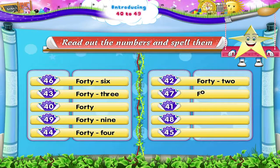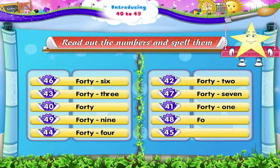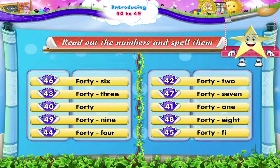The next one is 41 — FORTY ONE. 48 — FORTY EIGHT. And finally, Starry, 45 — FORTY FIVE.